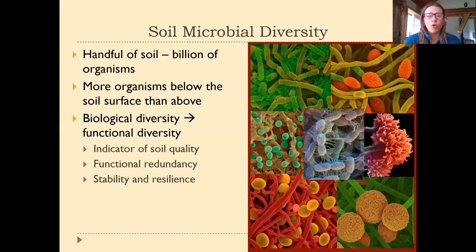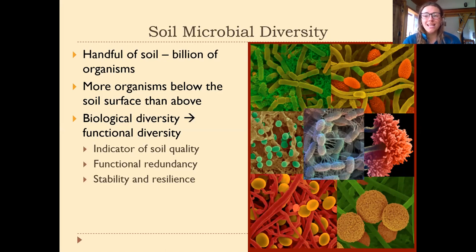This large biological and genetic diversity is important because all these different organisms have slightly different functions in the ecosystem. The more biological diversity we have in the soil is usually an indicator of soil quality and of functional redundancy. For instance, if we have several different bacteria responsible for nitrogen fixation and something happens to one of them due to a soil pH change or climate change, we have backup organisms able to do that same job, making the system more stable and resilient.